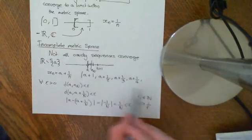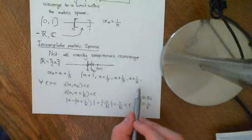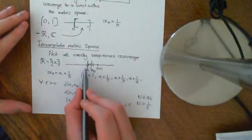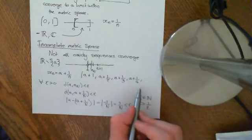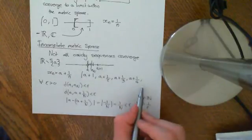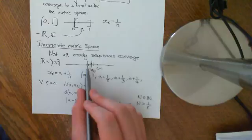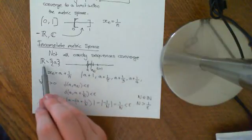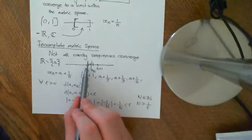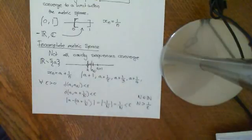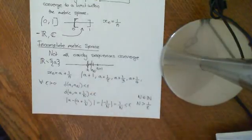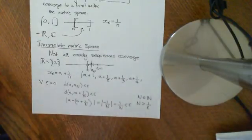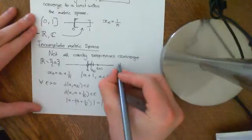But the sequence doesn't converge in this metric space, because in the real line it converges to a. And if it converged to something else in R minus {a}, it would converge to something else in the real line too. So it's converging to a point that isn't in this metric space, meaning it doesn't converge here. You have a Cauchy sequence which does not converge, so R minus {a} is an incomplete metric space.